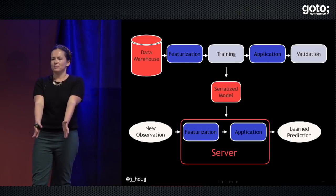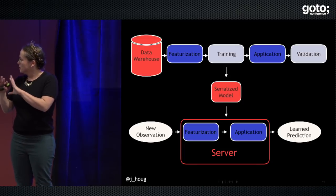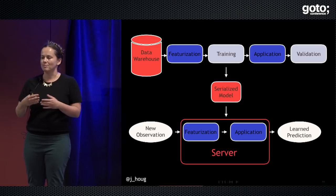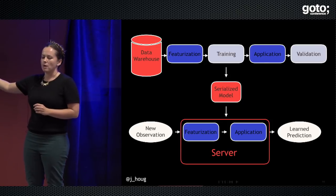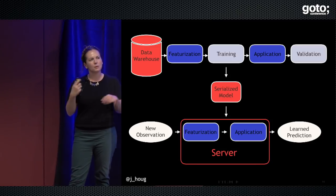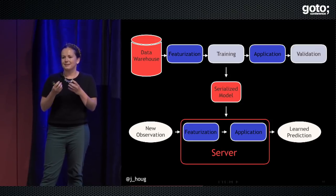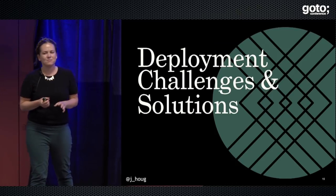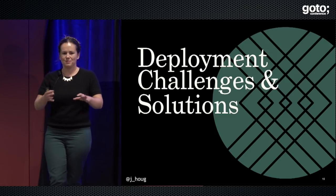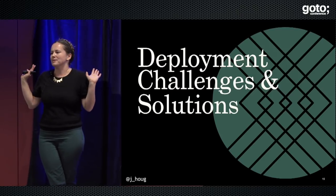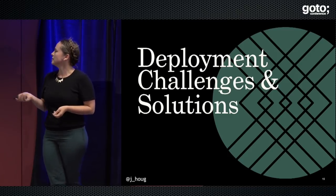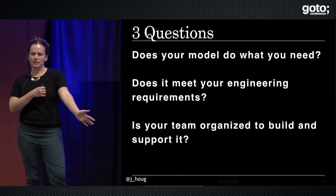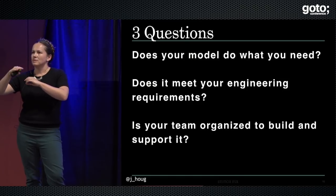We're going to focus on one type of model deployment: building a service that responds via an API, because this is extremely common — you see it at a ton of companies. You'll build a model scoring service. That determines how we want to serialize our model and what format that serialization takes, because we need to be able to load it into our service. We need to do some sort of serialization and then be able to load that in a web server — and that is deployment. It seems easy enough — it's mostly a problem with serialization.